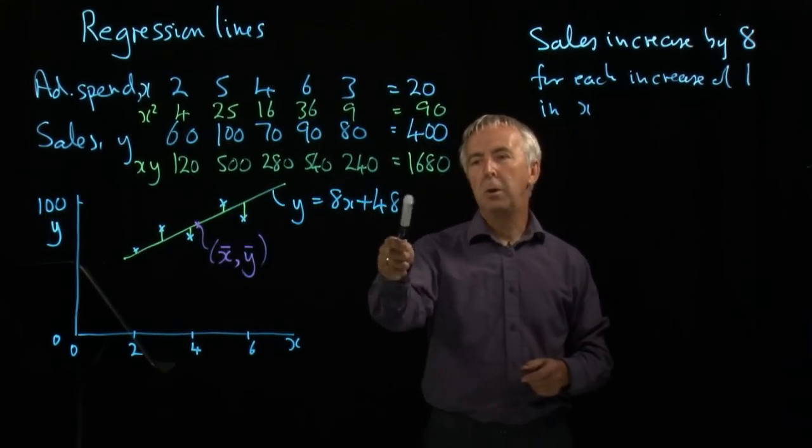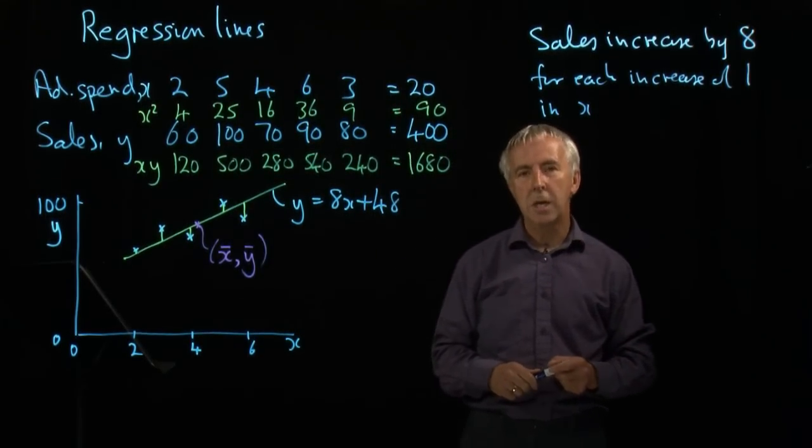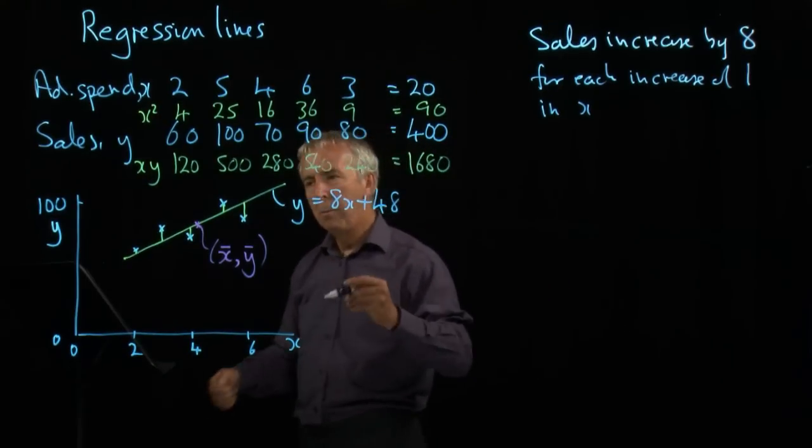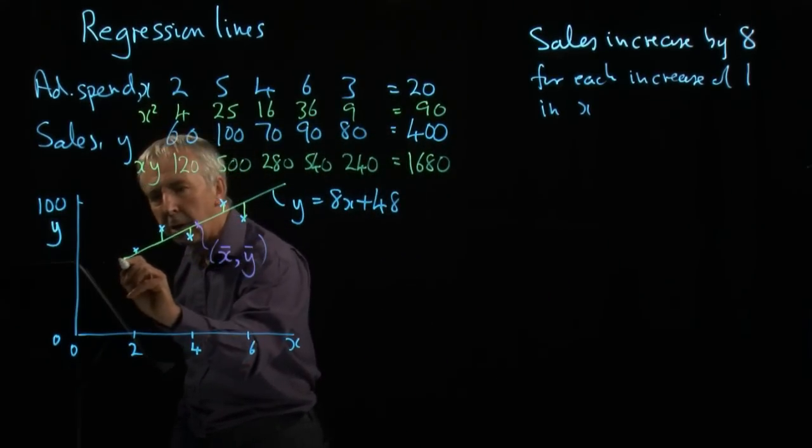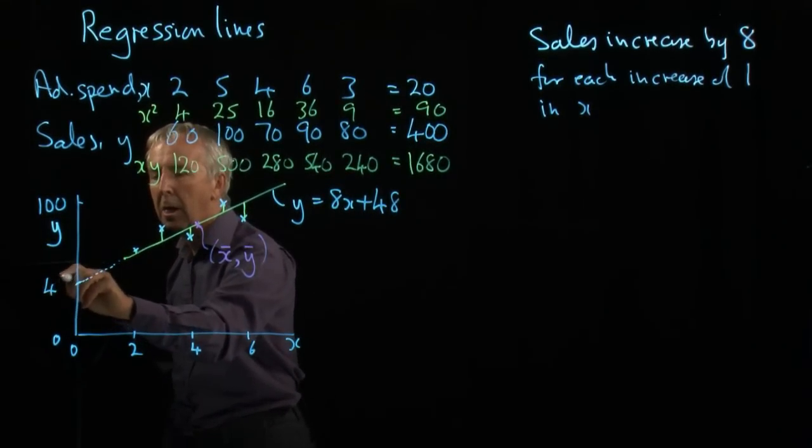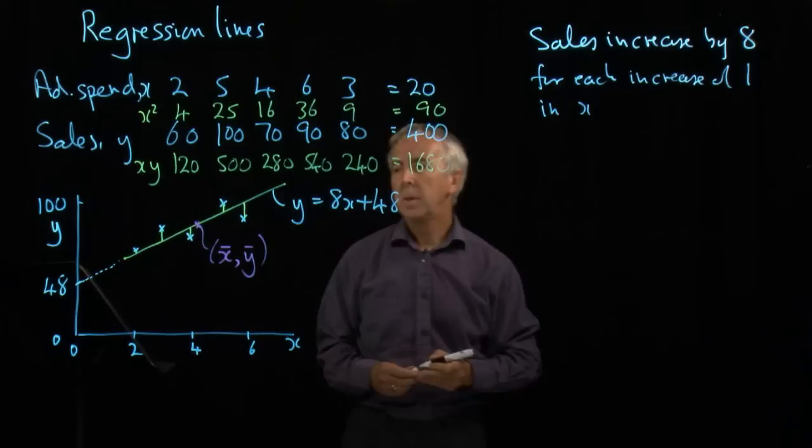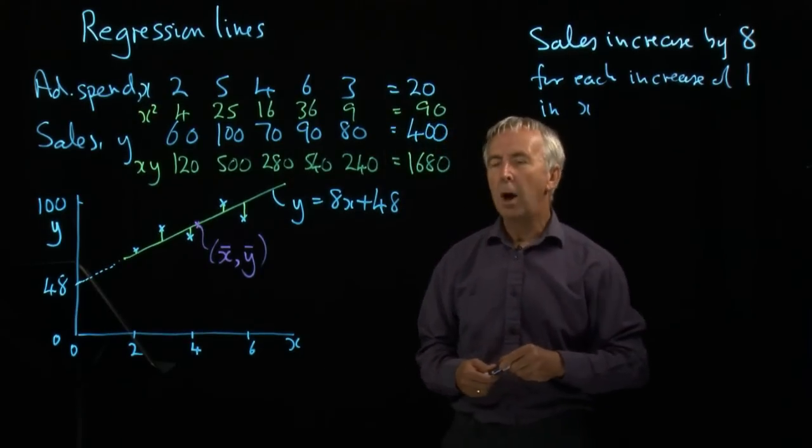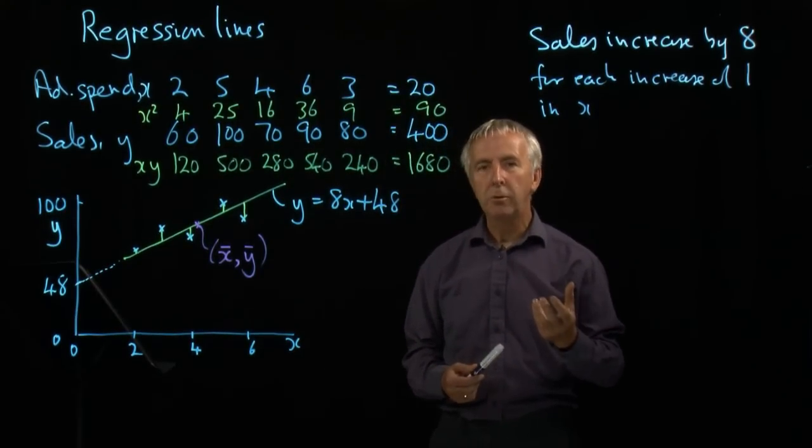And the other number we can look at, 48, is the intercept. And if you remember on straight lines, the intercept means, where does it cut the axis here? The y-axis. And that's the value of y that you get when x equals 0.